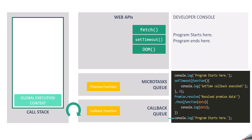Now we have two callback functions waiting for their execution. Since all the functions of this program are now executed, the call stack is empty. Which of these two callback functions should be executed first? We learned that the microtask queue takes priority over the callback queue. That means the callback functions in the microtask queue will be pushed to the call stack by the event loop first. So the callback functions of the microtask queue will be executed first, and once the microtask queue is empty, the callback functions of the callback queue will be executed.